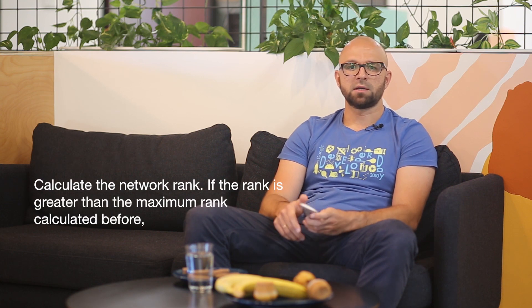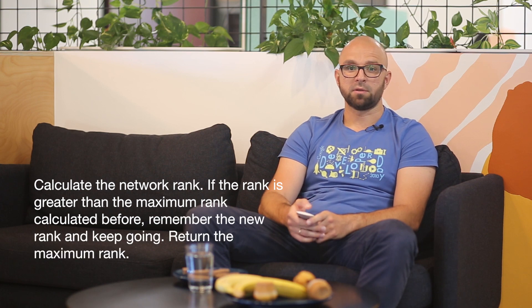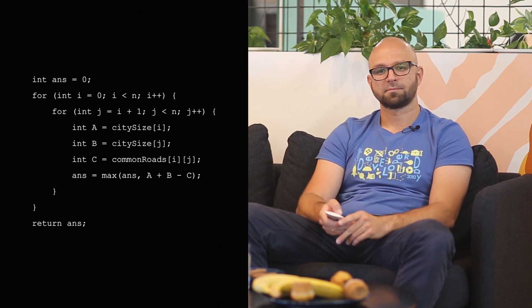This is what I mean: for all the pairs of cities, calculate the network rank. If the rank is greater than the maximum rank calculated before, remember the new rank and keep going. Return the maximum rank. In code, this would look like that.